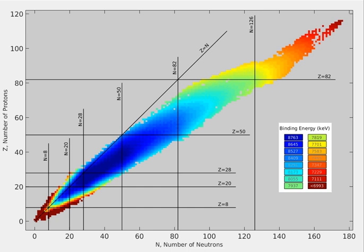This doubly magic configuration is the most likely to have a very long half-life. The next lighter doubly magic spherical nucleus is lead-208, the heaviest known stable nucleus and most stable heavy metal.